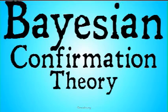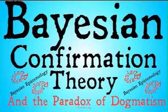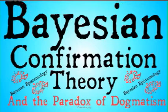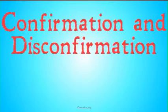Welcome back to Carnades.org. Today we're going to be continuing with our series on Bayesian confirmation theory and the paradox of dogmatism. This is part of our larger series on Bayesian epistemology. If you haven't watched the videos leading up to this video, I would highly suggest that you do, unless you have a really good sense of Bayes' theorem and the Dutch book arguments. With that out of the way, let's get started.